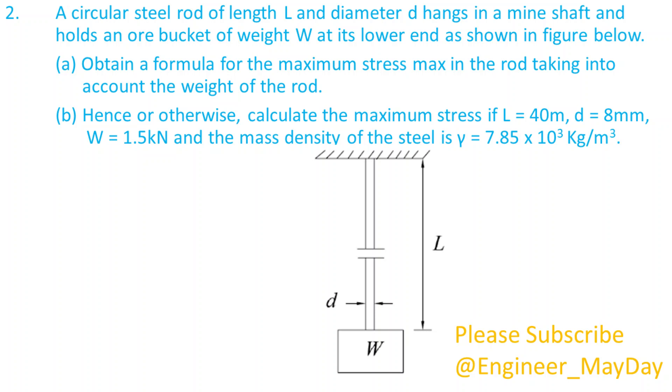Part B: Hence or otherwise, calculate the maximum stress if l equals 40 meters, d equals 8 millimeters, w equals 1.5 kilonewtons, and the mass density of the steel is gamma equals 7.85 times 10 to power 3 kilograms per cubic meter.